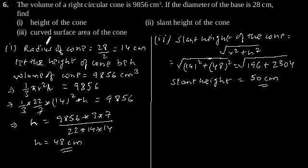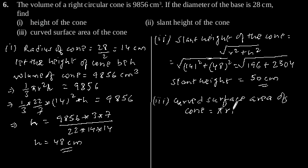Next find curved surface area of the cone. So using the formula of curved surface area of cone which is πrl, putting the value of r and l we will get 22/7 × 14 × 50.